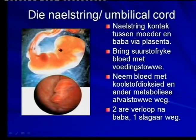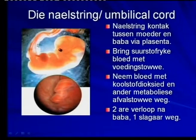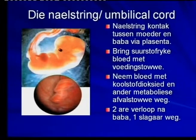Why two veins? Because from the mother through the placenta — and you must remember the umbilical cord is attached to the placenta — the two veins carry the very important oxygen and nutrients from the blood of the mother to the blood of the baby or the embryo. Just remember, the blood of the mother and the blood of the baby never mix.